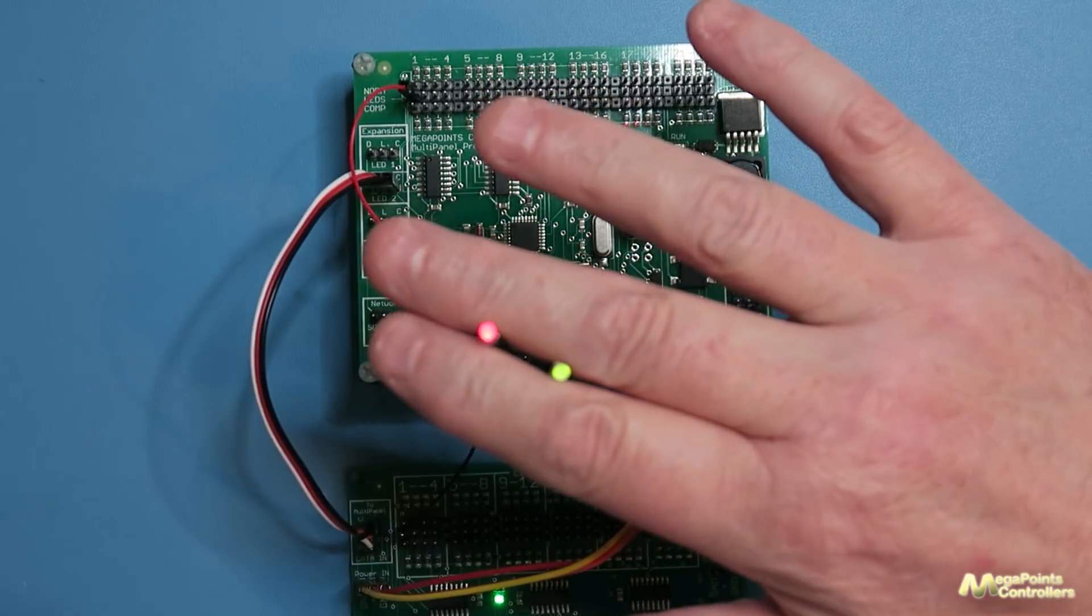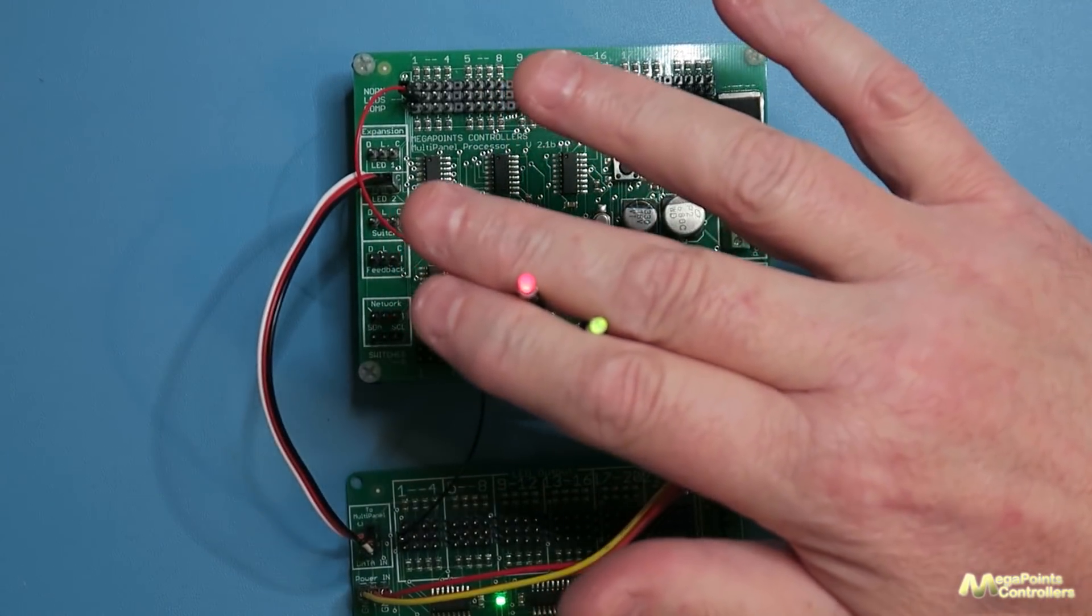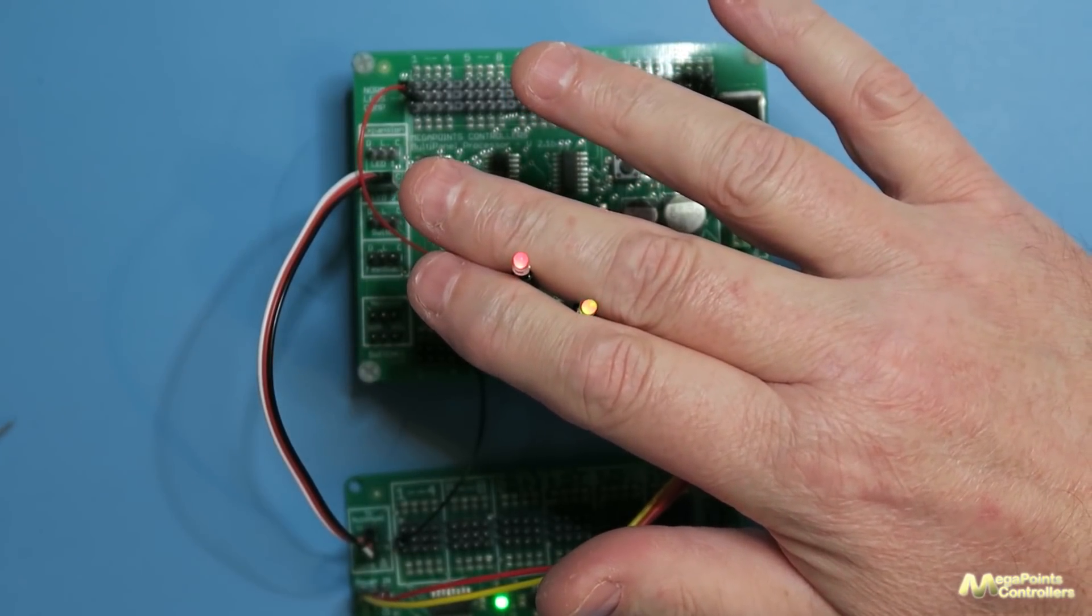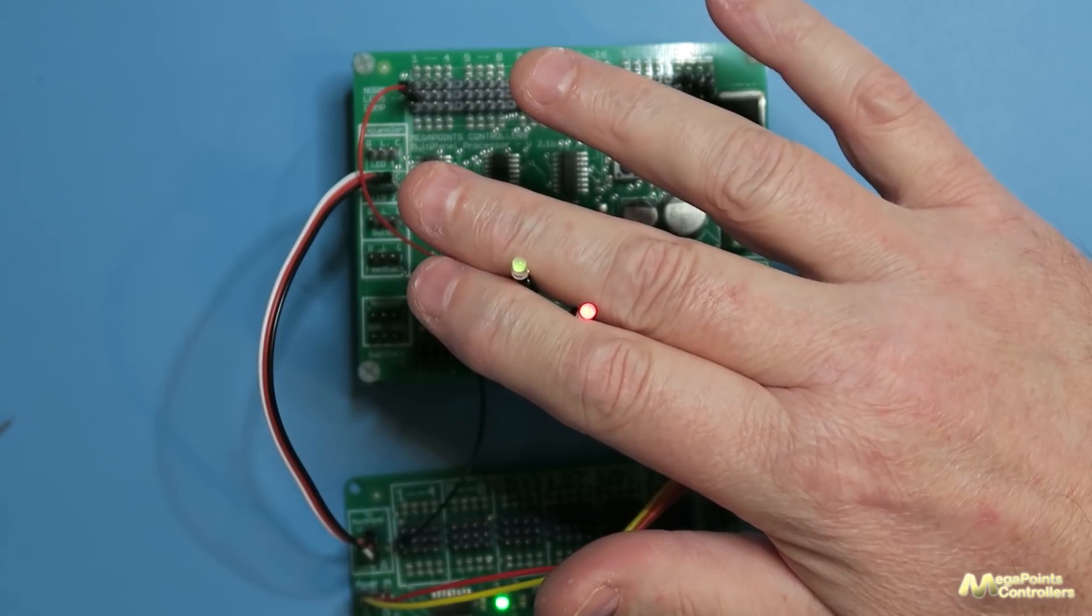And you can see now they're both illuminated red and green so I've got red on the left and if I toggle the switch you'll see they both flash and now I have green on the left and red on the right.